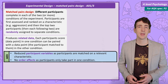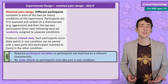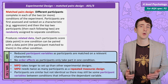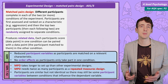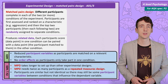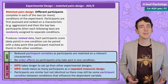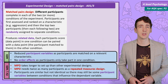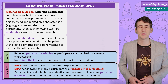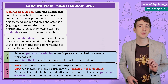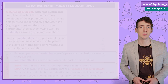But there are disadvantages. It takes longer to set up a matched pairs design, and we need more participants for the same amount of data compared to repeated measures. And the participants are similar in each condition but they are not identical, so there might still be some participant variables.